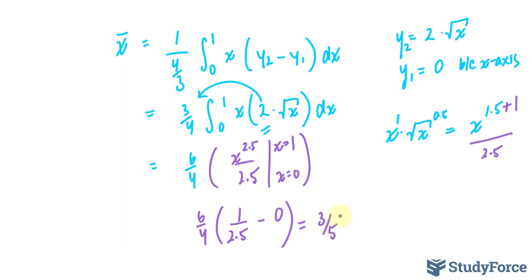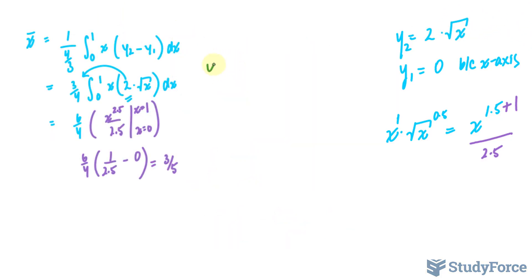That is the x-coordinate of my centroid. I have to do the exact same thing now to find the y-coordinate, but of course using the other formula. That formula was y-bar is equal to 1 over 2 times the area, which is 4 over 3, times the integral between 0 and 1. And that formula was y1 plus y2. So we have 0 plus this function, which is 2 times the square root of x, multiplied by y2 minus y1. y2 is this and y1 is 0.